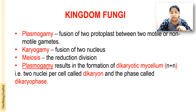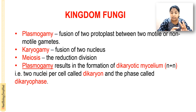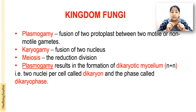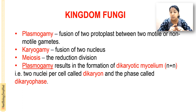Plasmogamy results in the formation of dikaryotic mycelium — n + n, dikaryotic meaning two nuclei per cell, called dikaryon; the phase is called dikaryophase. This is one of the three distinct mycelial phases. The dikaryophase is formed by fusion of two protoplasts (plasmogamy), and di means two, karyo means nucleus — two nuclei per cell, n + n stage.